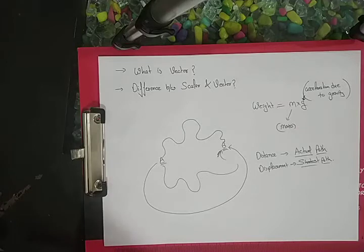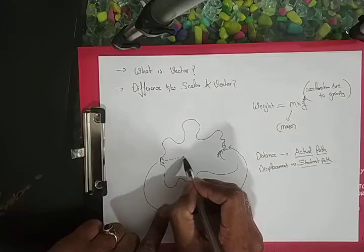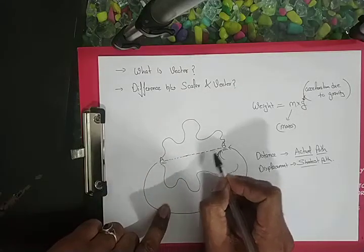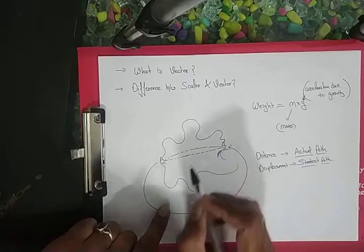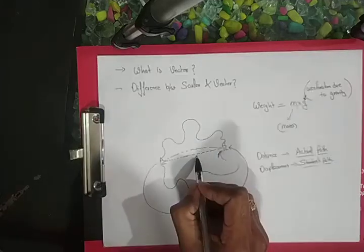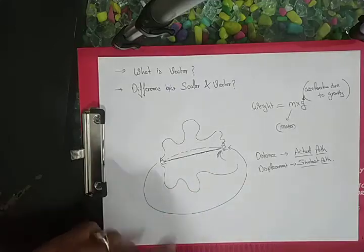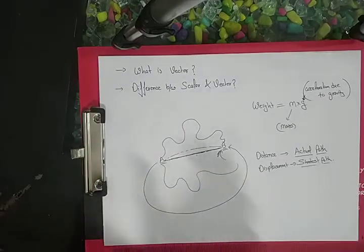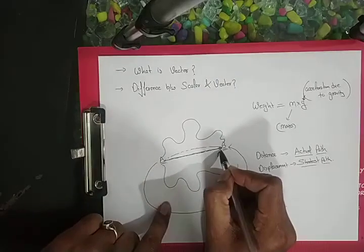But if I cover the shortest distance between A and B, that is this one. This one is the shortest. The actual path will have a higher value than this one. That means this only particular path between A and B is the shortest.